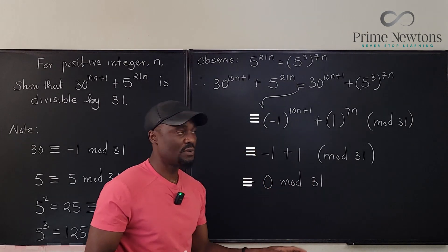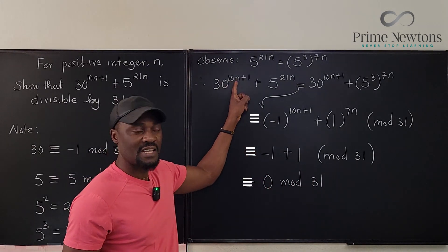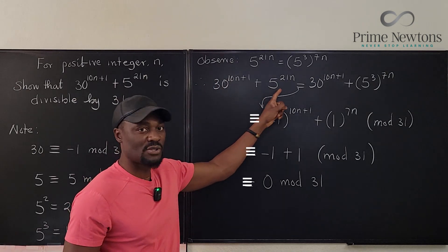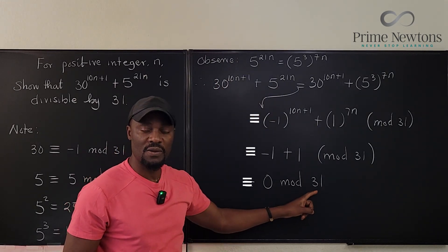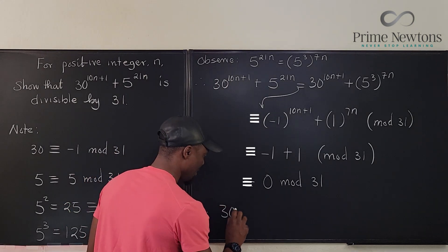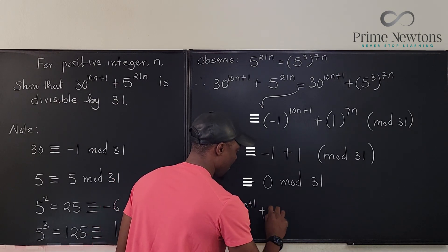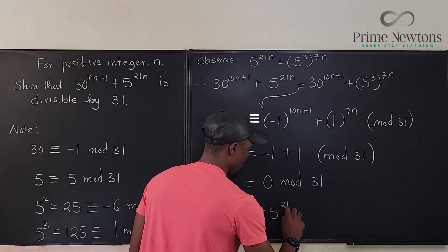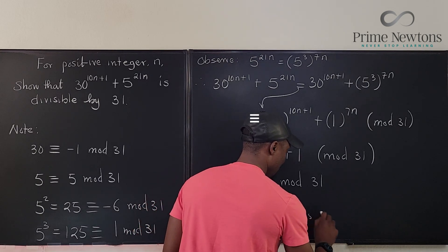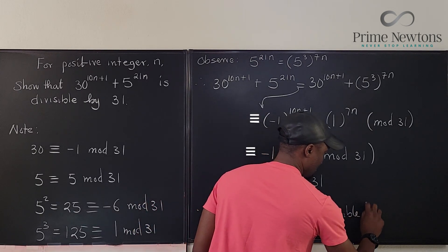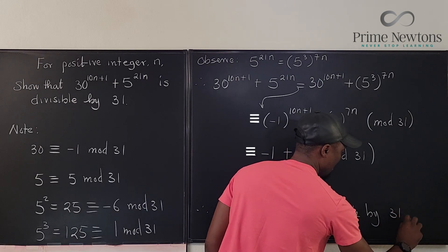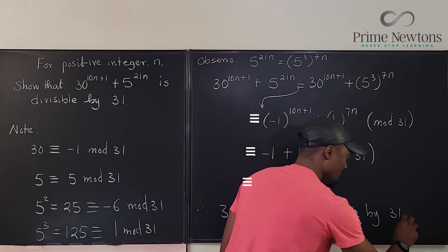We have just shown that no matter what n is, this expression here is always 0 mod 31. 30^(10n+1) + 5^(21n) is divisible by 31. Done.